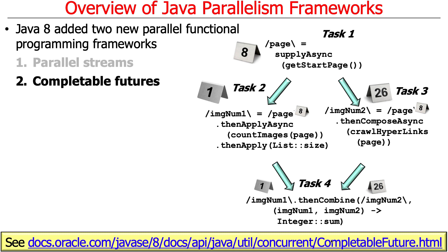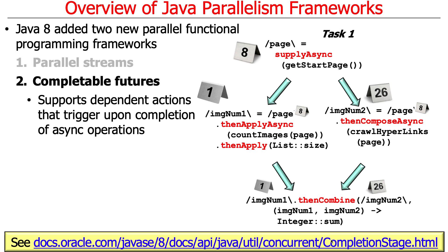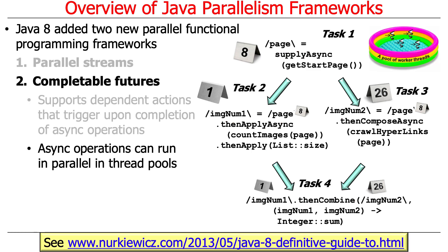With completable futures, you build your application out of a bunch of tasks that run asynchronously — they don't block the calling thread; they run in a pool of threads. As these asynchronous operations complete, their completion triggers dependent actions. You basically have a graph of programming tasks: start something in the background, and when it finishes, run two tasks in parallel, and when they finish, run the next task. It's a task graph of asynchronous processing — a really fascinating model, though not intuitive if you're used to conventional approaches. Asynchronous operations can run in thread pools using either the common fork-join pool or a custom thread pool.